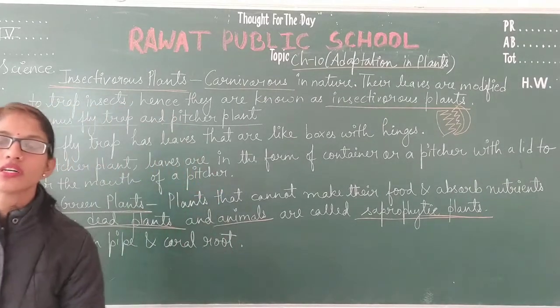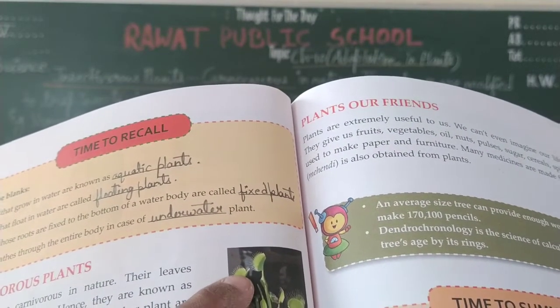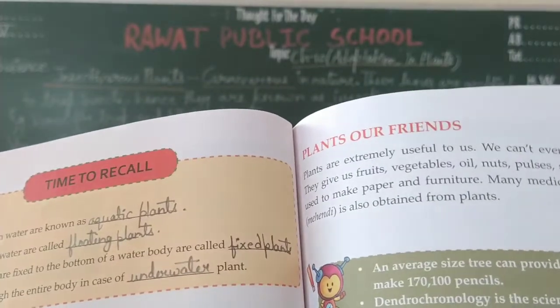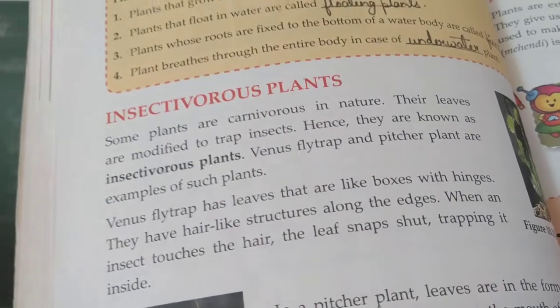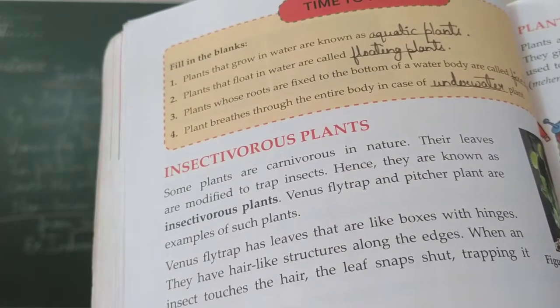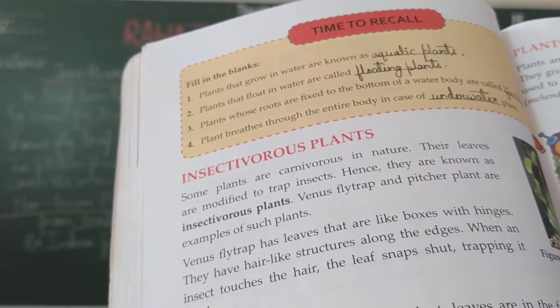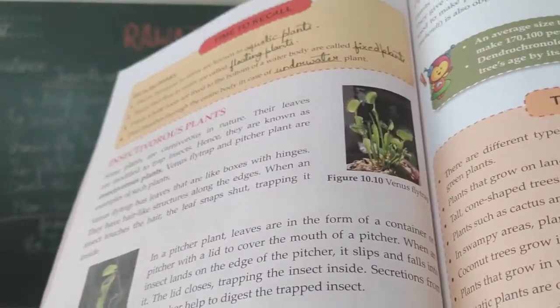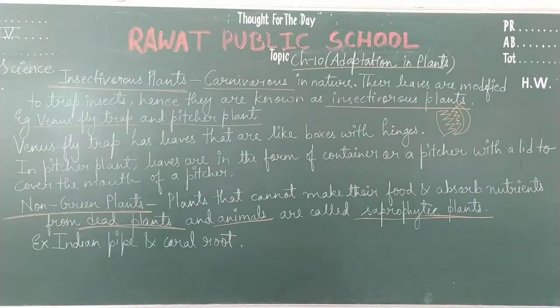Now let's look at the pictures. Here you can see the Venus flytrap — the leaves have comb-like structures with hinges, and when an insect sits on them the leaves shut and catch the insect. Similarly, in the pitcher plant, the leaves are shaped like a pitcher. When insects come to the mouth, the lid closes and the insect falls inside where digestive juices help in digestion. The next diagram shows the Indian pipe, which is a saprophytic plant, and the last is the coral root. These are pictures of non-green or saprophytic plants.